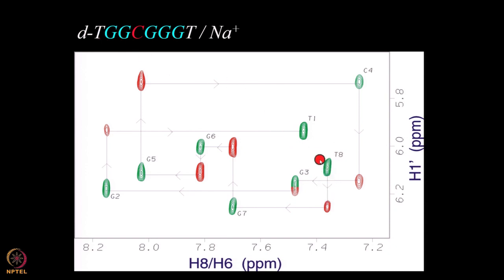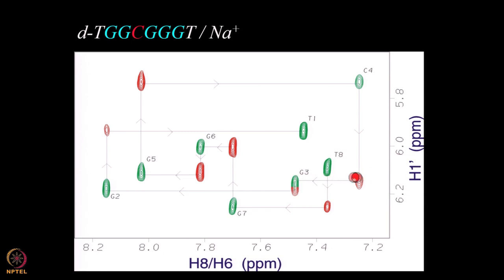You can start from either end and walk the sequence. From T8 you see to G7, from G7 to its own base, then sequentially to G6, from G6 to G5, then G5 to C4. From C4 you go to G3, then the sequential connection leads to G2, and from G2 to T1. The sequential walk is easily done for the entire sequence.